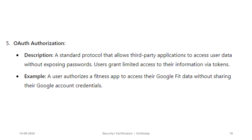OAuth is another method of authorization. It is a standard protocol that allows third-party applications to access user data without exposing the passwords. Users grant limited access to their information via tokens. For example, a user authorizes a fitness app to access their Google Fit data without sharing their Google account credentials. It's common to use your Google account or your Apple account to have access to data in other companies, allowing data sharing without exposing confidential information.